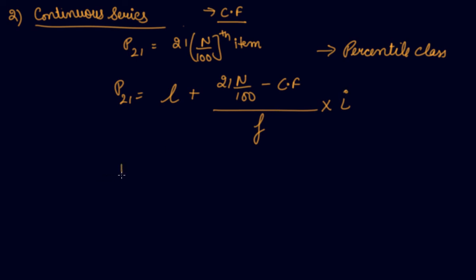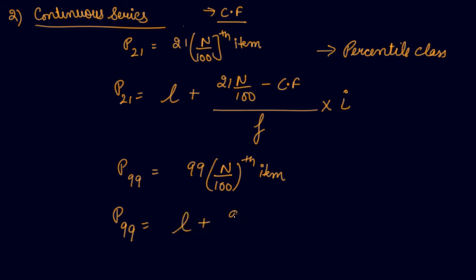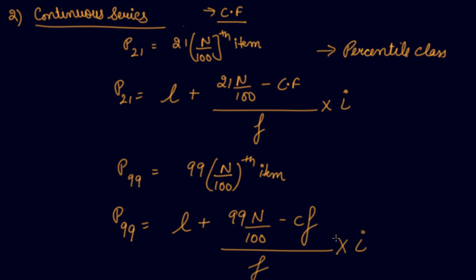For P99 in continuous series, use: lower limit plus (99N/100 minus cumulative frequency of the preceding percentile class) divided by frequency of the percentile class, multiplied by the class size. In this way you can find out percentiles in continuous series. Download our Scholars Learning app and enjoy the learning experience with us.